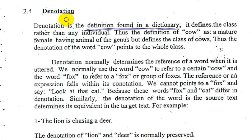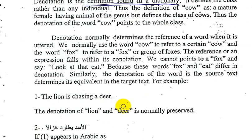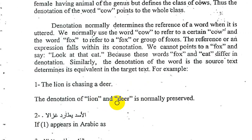Denotations — it is the literal meaning that's found already in the dictionary. The meaning is very clear. The source text determines its equivalence in the target text. For example: the lion is chasing a deer. The meaning is very clear.